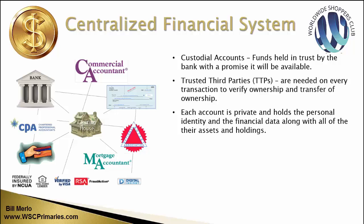In the last crisis they moved it too often — banks can turn that money over 20, 30, 40 times and make a lot of money from what you have sitting in the bank. These people are all called trusted third parties. They're needed in every transaction to verify ownership and transfer of ownership, because it's dealing with two people and it needs somebody in the middle to verify you're you and the other person is them. In this centralized financial system, each account is private and holds personal identity and financial data along with all assets and holdings — everything about your finances is known and held by someone other than yourself.